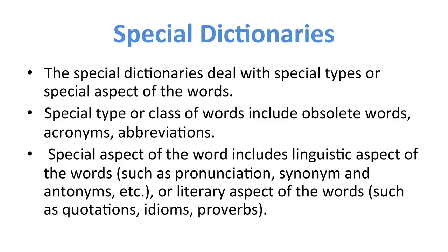Special dictionaries deal with special types or special aspects of the word. Special types or classes of words include obsolete words, acronyms, abbreviations, etc. Special aspects of the word include linguistic aspects such as pronunciation, synonyms, and antonyms, or literary aspects such as quotations, idioms, and proverbs.